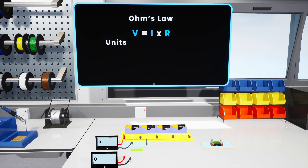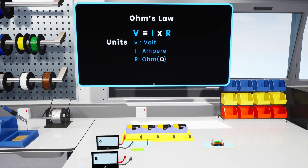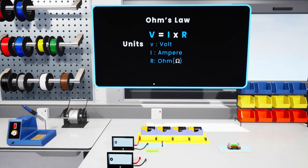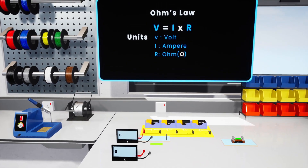Voltage is measured in units of volts. I, which represents the current, is measured in amperes. And R, the resistance, is measured in ohms.